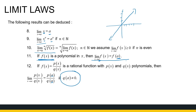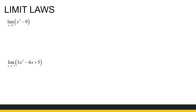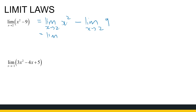Let's see how to use these limit laws with examples, starting slowly step by step. For the limit as x approaches 2 of x² minus 9 — this is a polynomial — using the limit laws, that's the same as the limit as x approaches 2 of x² minus the limit as x approaches 2 of 9. The limit of x² as x→2 gives 2² = 4, and the limit of a constant is the constant. So we get 4 minus 9, which is minus 5.